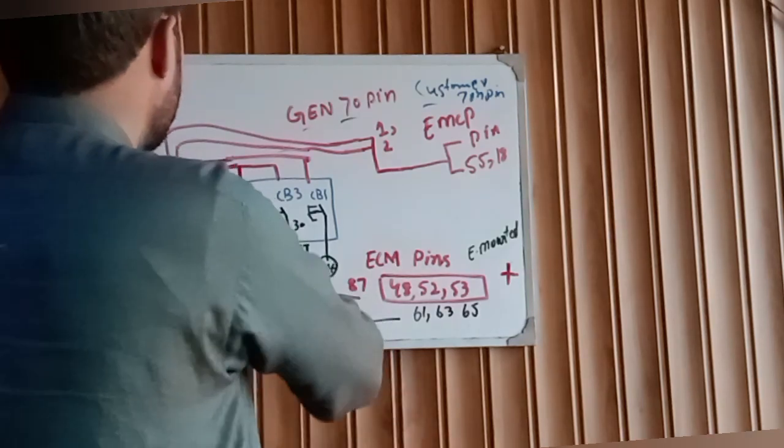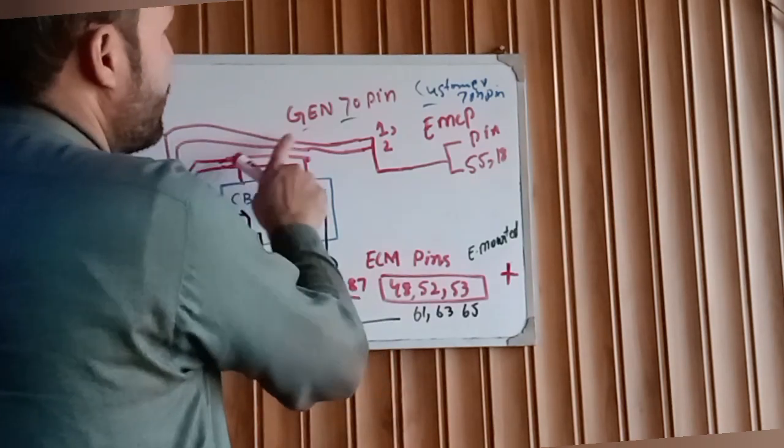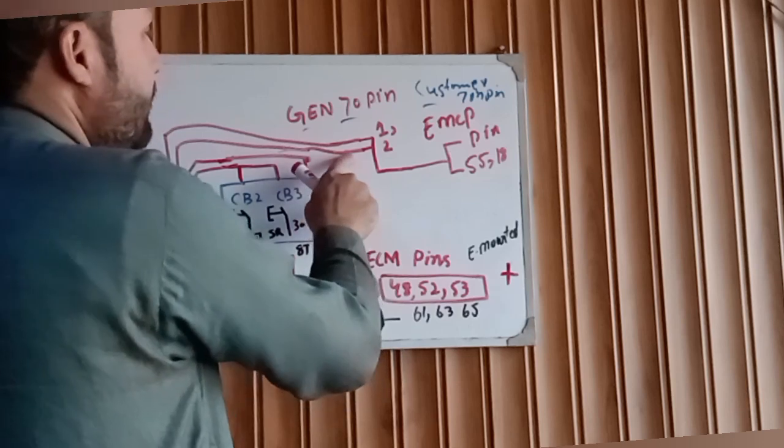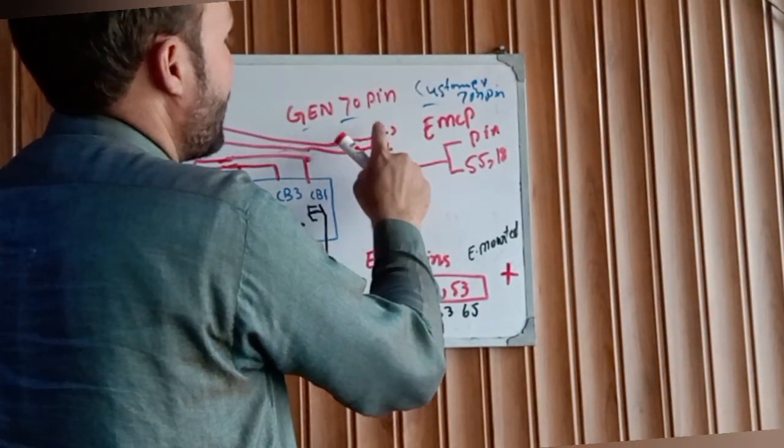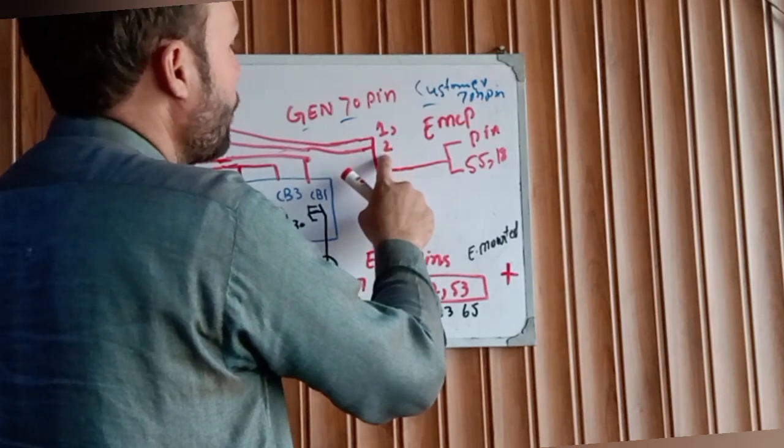Now from the battery, two wires are going to Gen 70 pin connector input in pin one and pin two.